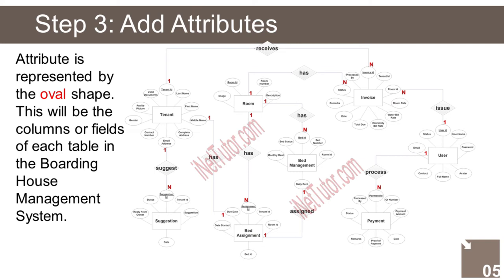The Room entity has the following attributes: Room ID (Primary Key), Room number, Description, Image. The Bed Management entity has the following attributes: Bed ID (Primary Key), Bed number, Room ID, Daily rent, Monthly rent, Bed status (Available, Occupied). The Bed Assignment entity has the following attributes: Assignment ID (Primary Key), Tenant ID (Foreign Key), Room ID (Foreign Key), Bed ID (Foreign Key), Date started, Due date.